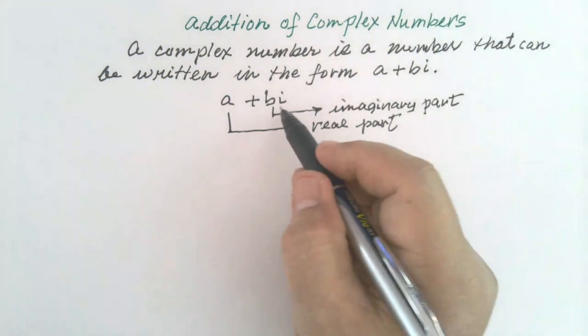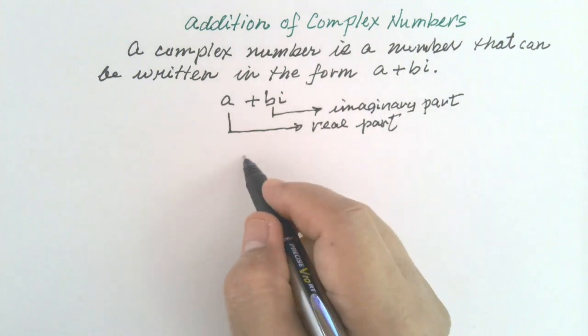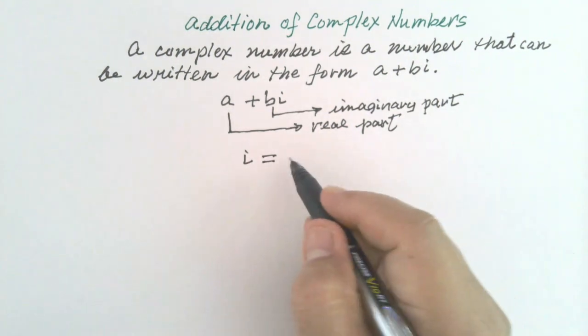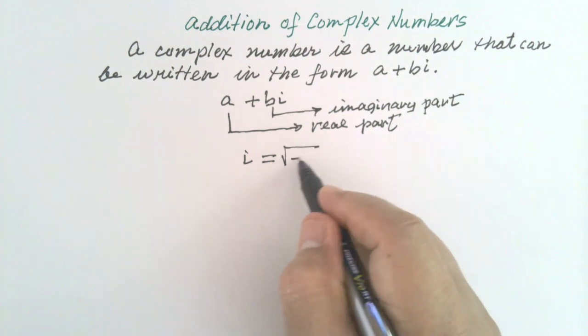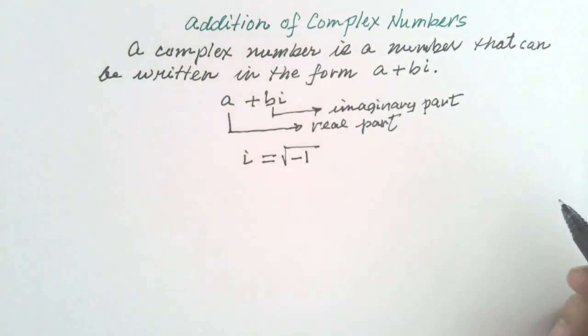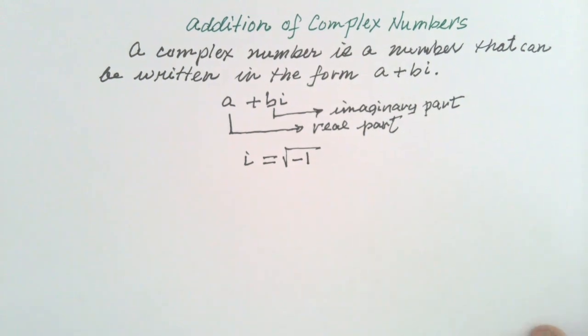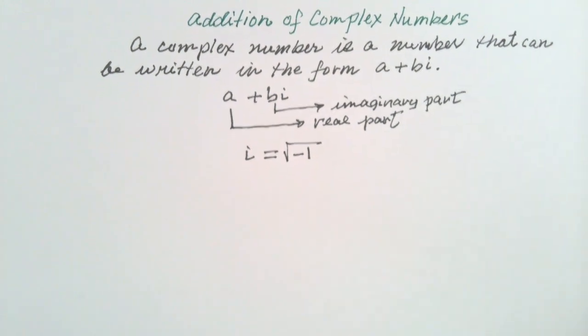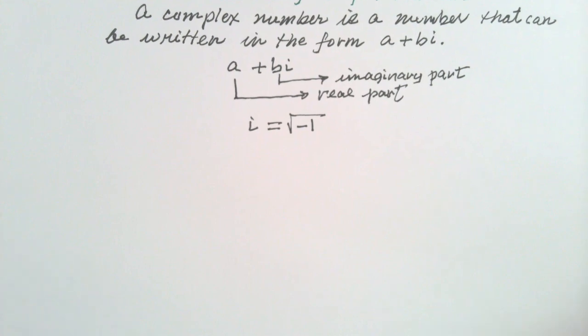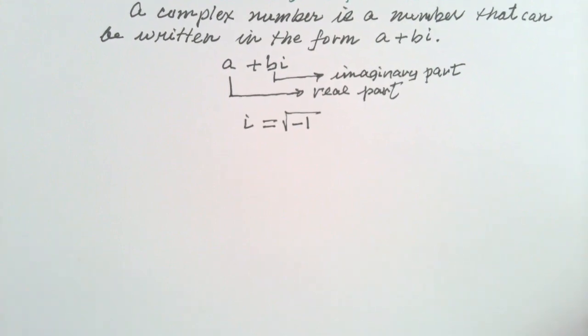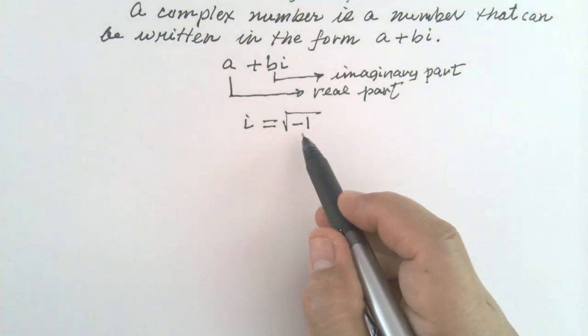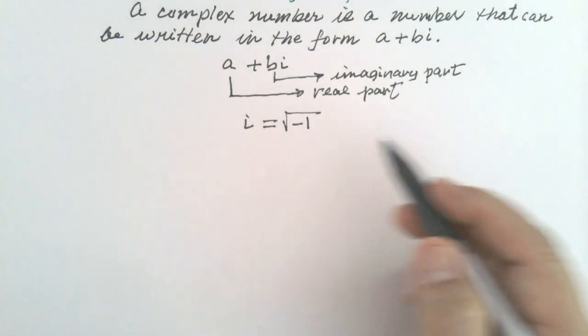This I in BI is equal to square root of negative 1. The square root of negative 1 cannot be extracted because there is no number such that when you multiply it by itself, you will get negative 1.